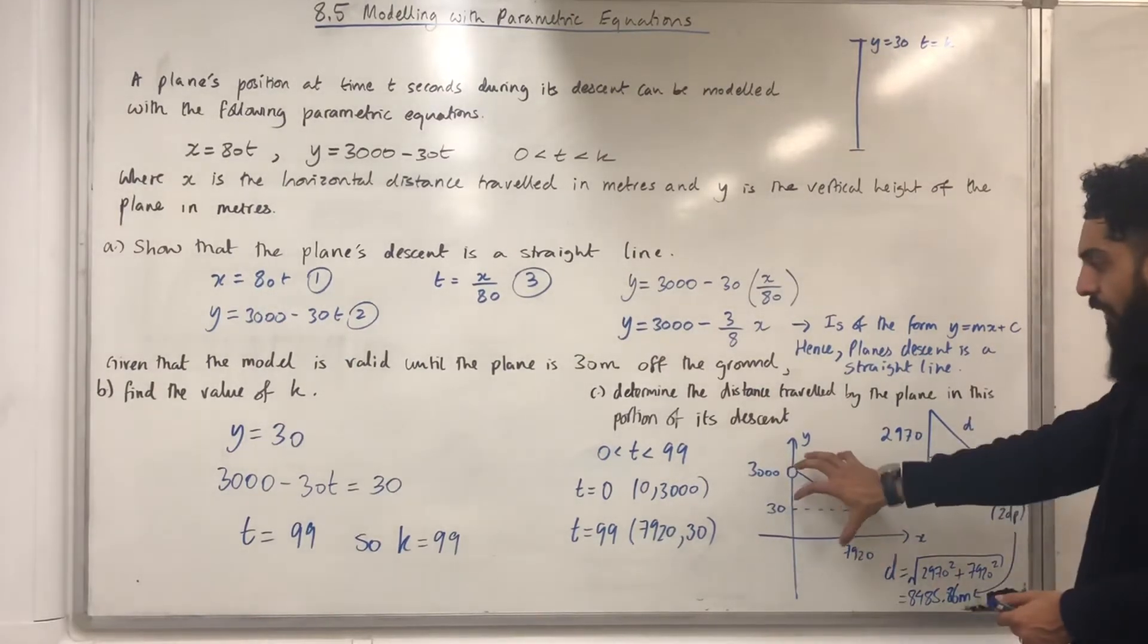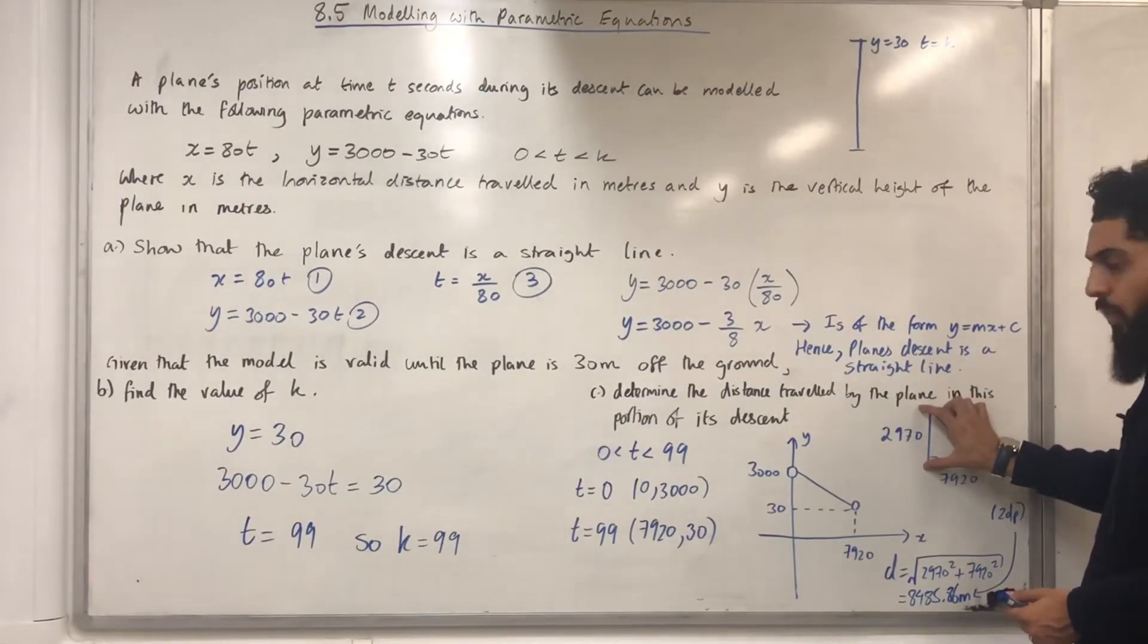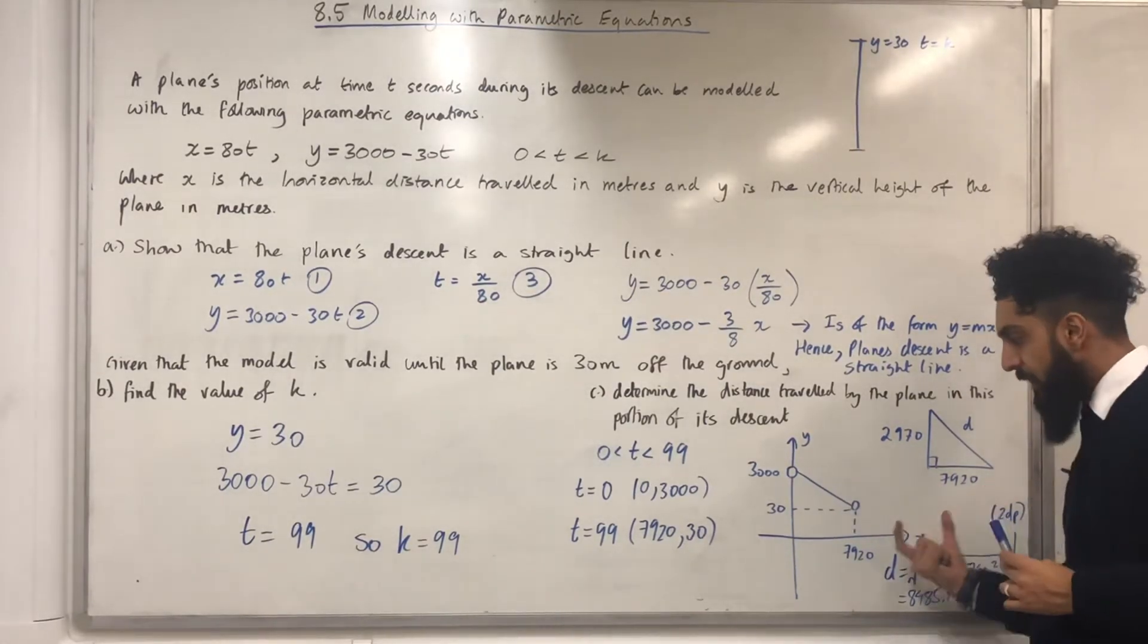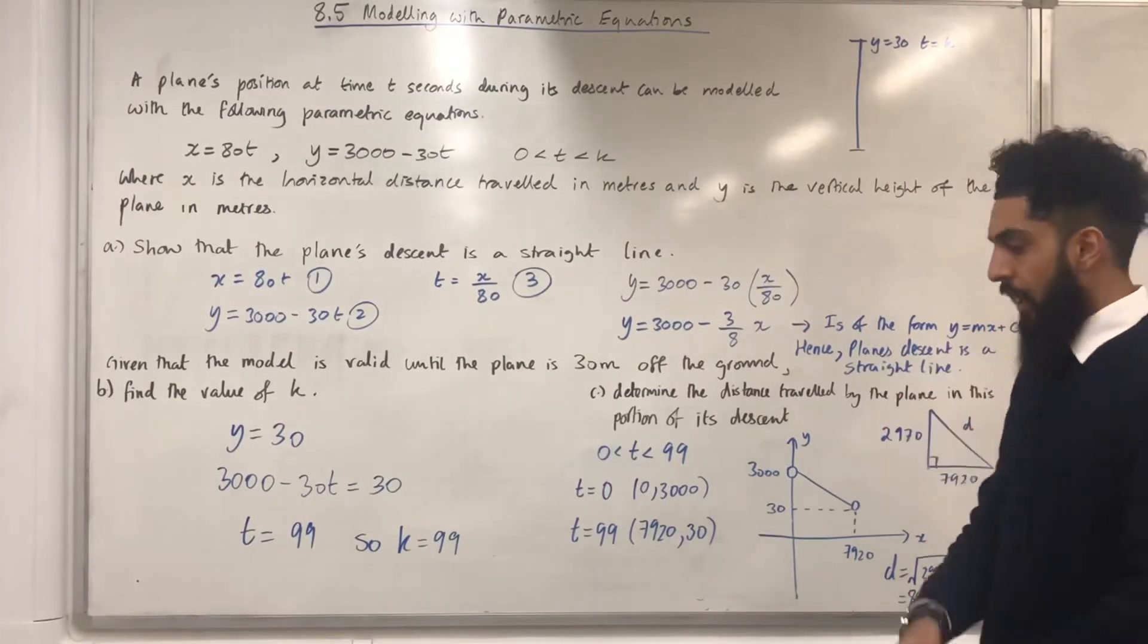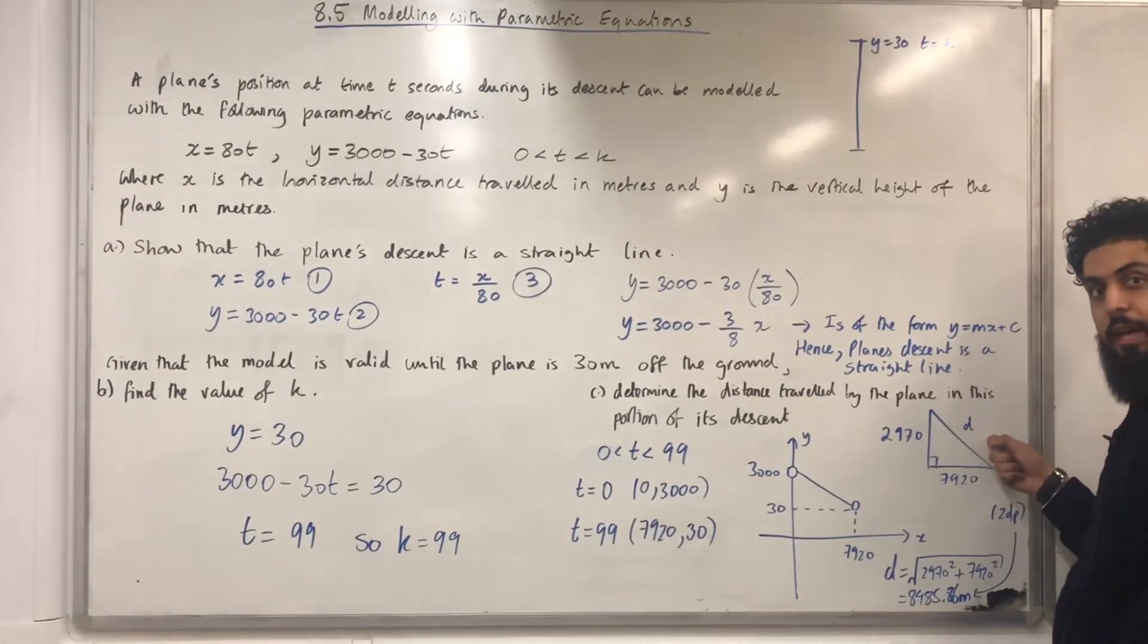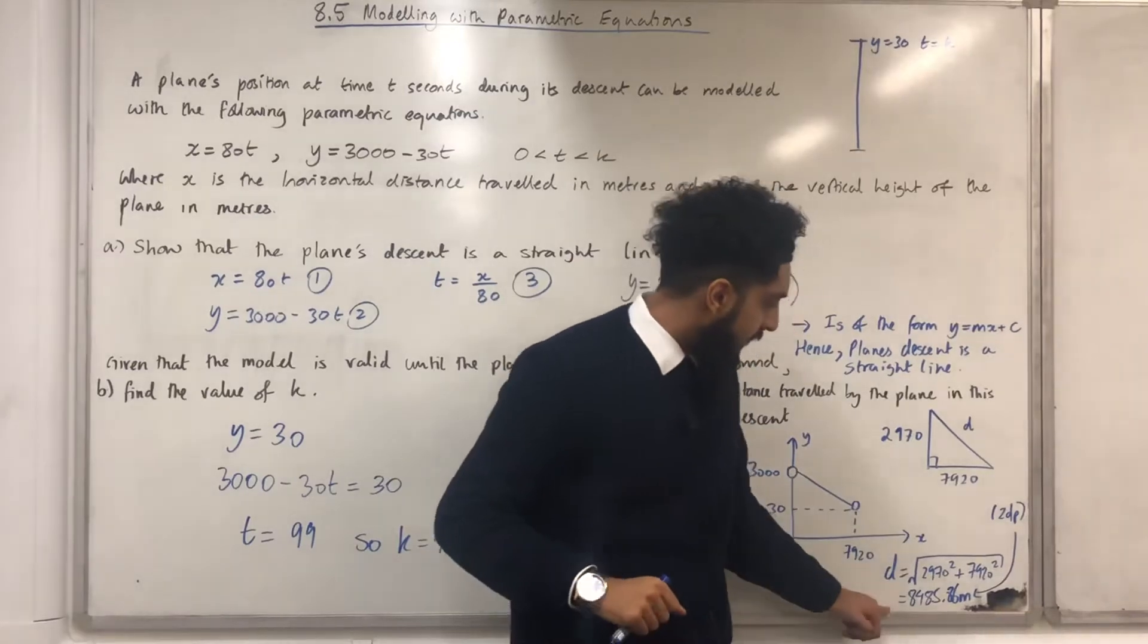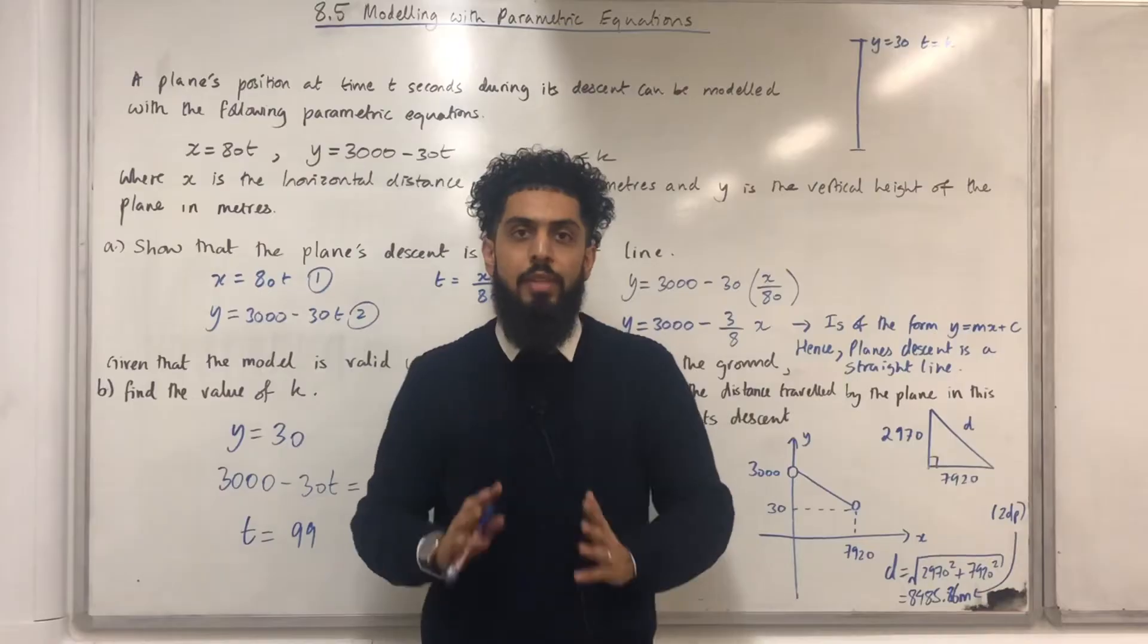Now, from this graph, I can actually draw a triangle over here separately. I know that this vertical distance over here would just be 3000 take away 30. And this horizontal distance over here, 7920, is just this horizontal distance over here. The distance traveled by the plane in this portion of its descent, I'm going to call it d. To work out d, I can just apply Pythagoras theorem on this right-angled triangle. And by applying Pythagoras theorem, I get d equals 8485.86 meters to two decimal places.